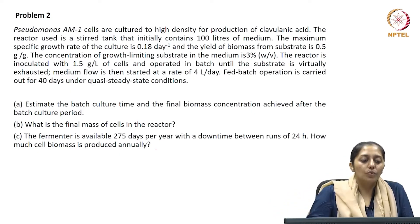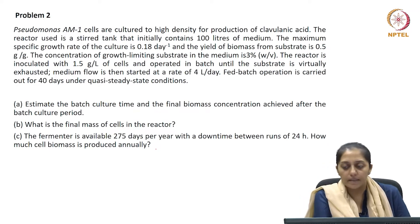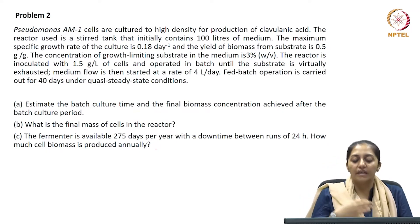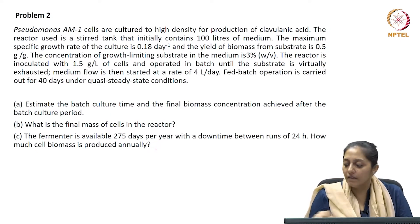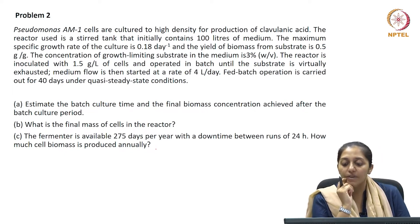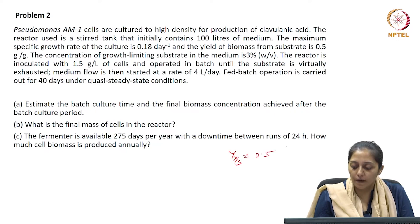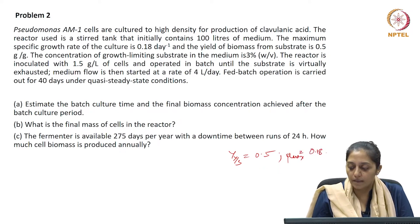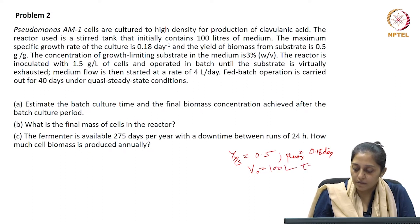Let us check out problem number 2. Pseudomonas AM1 cells are cultured to high density for production of clavulinic acid. The reactor used is a stirred tank that initially contains 100 liters of medium. So we have initial volume V₀ as 100 liters. The maximum specific growth rate of the culture is 0.18 day inverse and the yield of biomass from substrate, Yx/s, is 0.5 grams per gram. Mu max is 0.18 day inverse and V₀ is 100 liters at T equals 0.